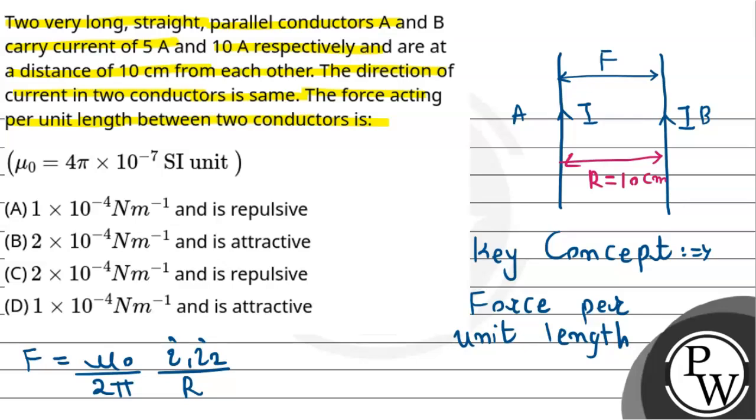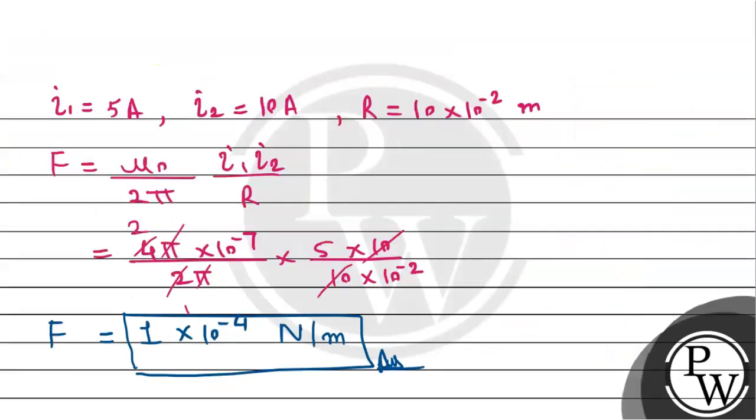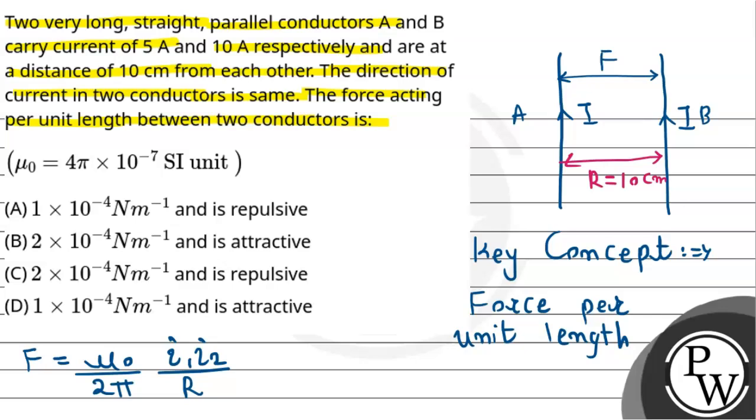Now what will be the nature of the force? As per the given data, you can see that if directions are in the same direction, the force will be attractive. And if directions of current are opposite, the force will be repulsive. Since the direction of current is same here, that is why the force will be attractive in nature. And therefore option D is going to be correct.